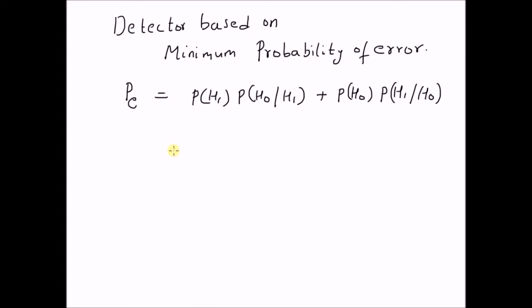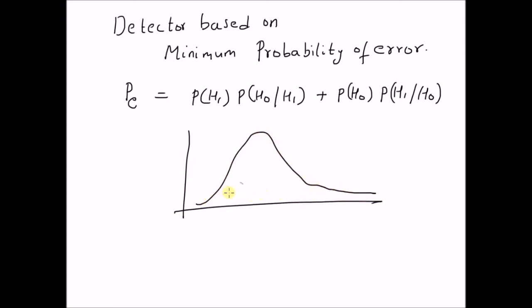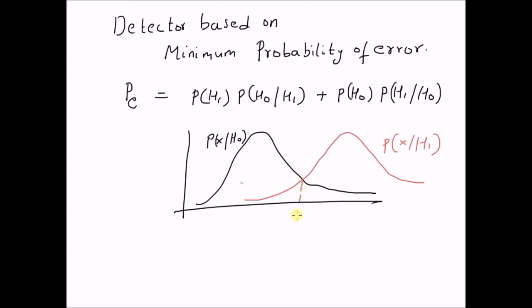Graphically, it can be represented as follows. This plot represents the probability of X given H0, and this plot represents the probability of X given H1. This point represents the threshold gamma, where the axis is given by the observation X. For all values of X less than gamma, we have region R0, and for all values of X greater than gamma, we have region R1.